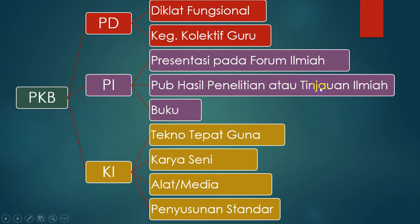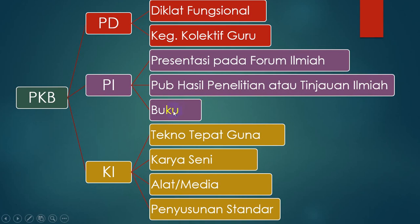Hasil penelitian atau non hasil penelitian dapat dipublikasikan dalam bentuk buku, atau dimuat di jurnal, di koran, atau di buletin, atau diseminarkan di sekolah. Setiap jenis publikasi ada nilainya yang berbeda-beda. Hasil penelitian dan bukan penelitian juga masing-masing punya nilai yang berbeda. Kemudian buku ada dua macam yaitu buku pendidikan dan buku pelajaran, masing-masing nilainya berbeda.